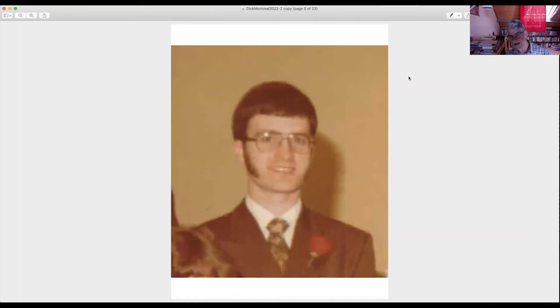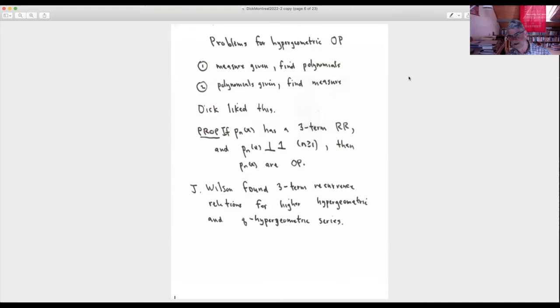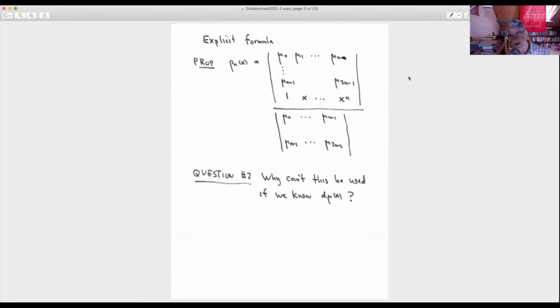Yes. Dennis, in the beginning of your lecture you had this determinantal formula, which is well known, and then you said there is also such a formula if you replace the monomials by something else. Yes. But does it still have the same form, that formula? No, you have to change these moments. Yeah, yeah, of course. You know, you have to take L of whatever that polynomial is with another polynomial.